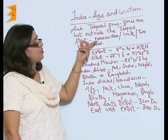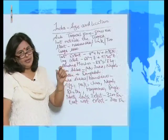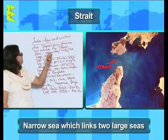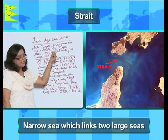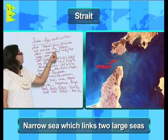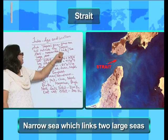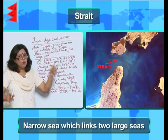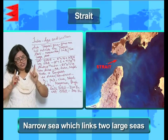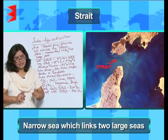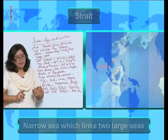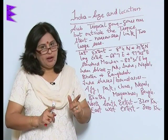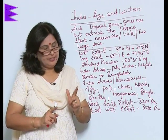Next we have strait. A strait is a narrow sea which links two large seas. An example is the Palk Strait.